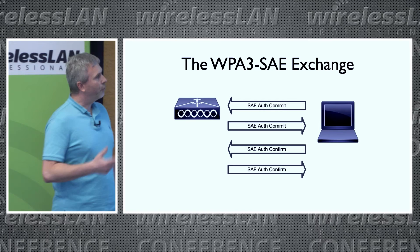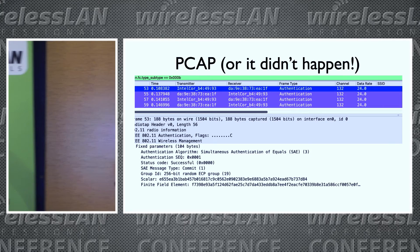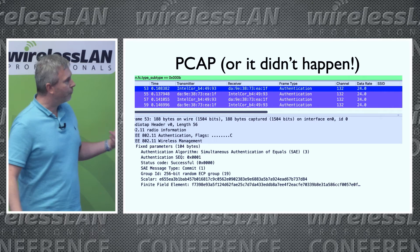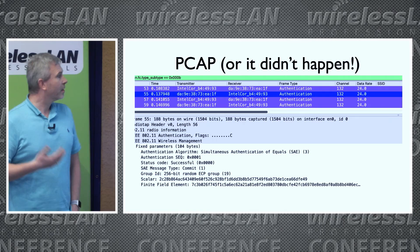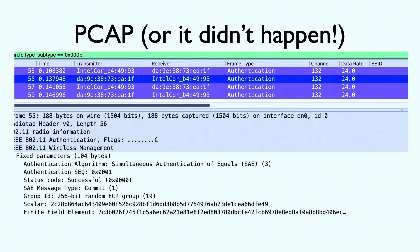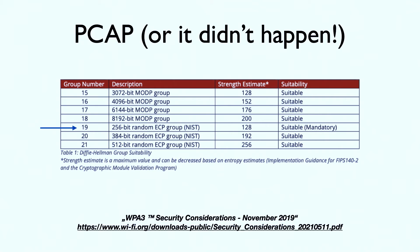We have the commit phase — two packets — and we have the confirm phase — again two packets. The client sends the scalar and the finite field element, the two values for the Diffie-Hellman implementation. The access point sends the same. We have a group ID, and here it says 256-bit random ECP group number 19. Both peers need to agree on the same curve. This curve gives us a 128-bit security level. There are even more secure options, but 256-bit is mandatory. There are also legacy options with legacy cryptography, though I'm not aware that any vendor has implemented that.